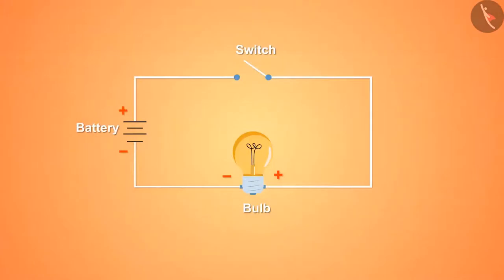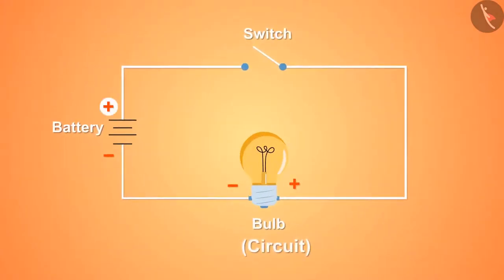This diagram shows a circuit in which the positive terminal of the battery is connected to the positive terminal of the bulb via wire through a switch, and the negative terminal of the battery is connected to the negative terminal of the bulb.